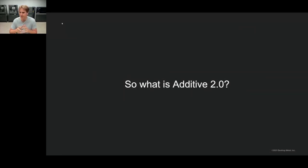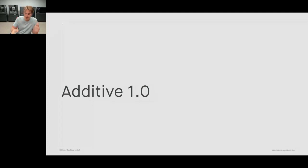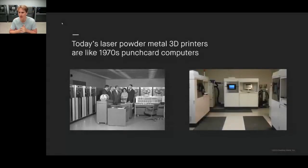To understand Additive 2.0, we first need to start by understanding what was Additive 1.0. Today we're specifically talking about metals. When we look at traditional metal 3D printing, we're really talking about these lasered, powdered metal 3D printers — DMLS systems, SLS machines.